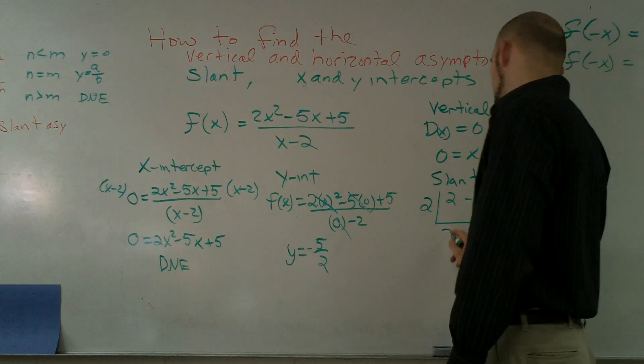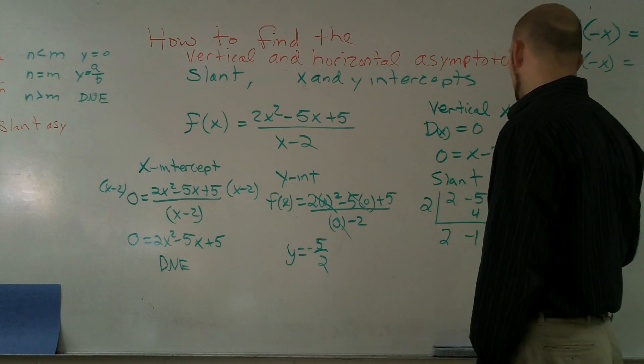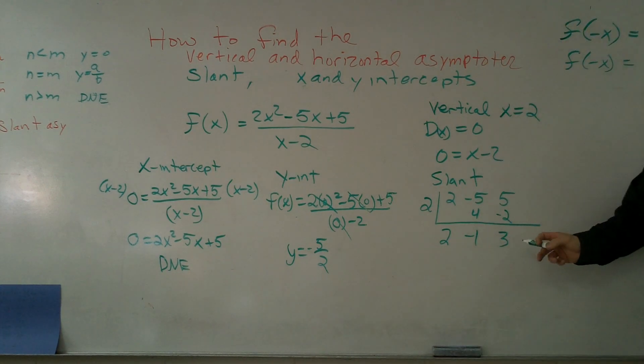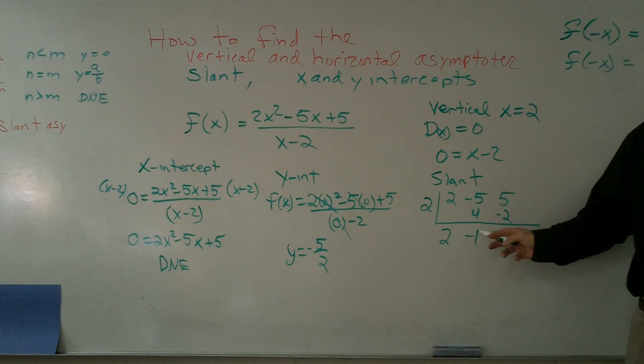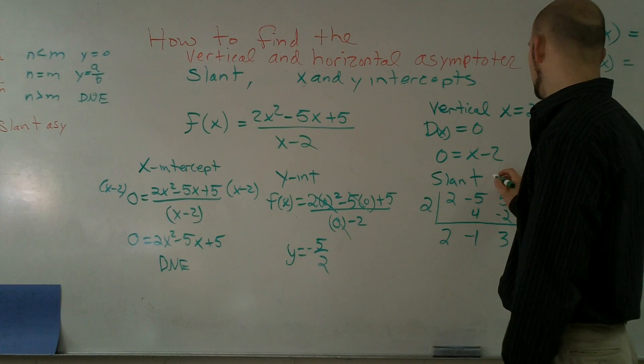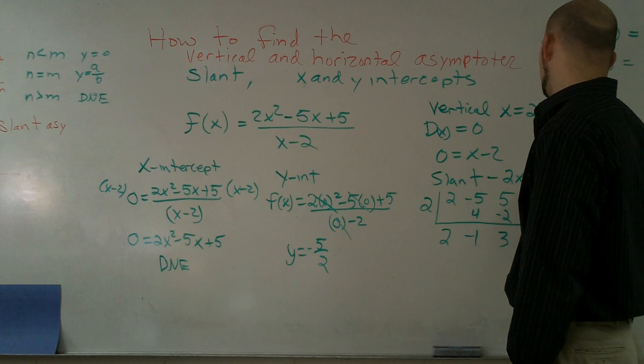So therefore I drop down the 2, multiplied by 2, I get 4, negative 1. 2 times negative 1 becomes negative 2. I get 3. Remember, 3 is going to be my remainder. So therefore here, if I write this as an expression, I get 2x minus 1. So my slant asymptote is going to be 2x minus 1.